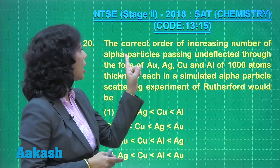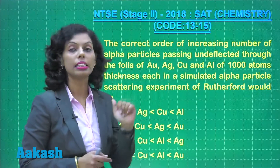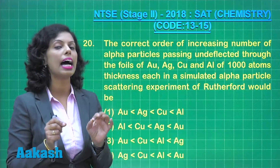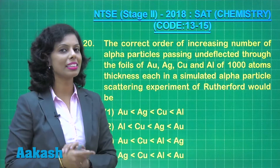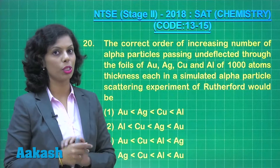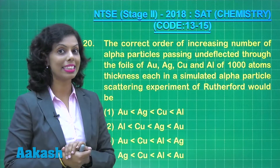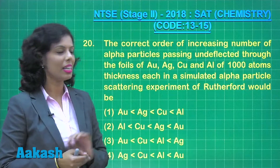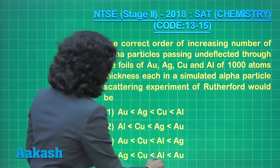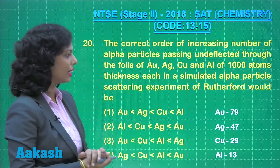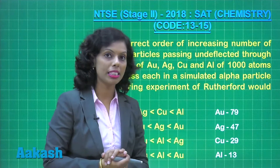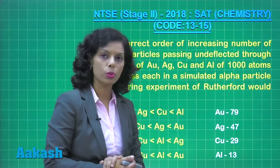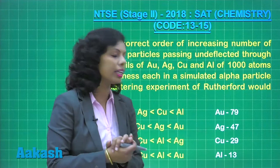To find the number of undeflected alpha particles, consider that the number of alpha particles deflected is directly proportional to Z², where Z is the atomic number. The atomic numbers are: gold = 79, silver = 47, copper = 29, and aluminum = 13.